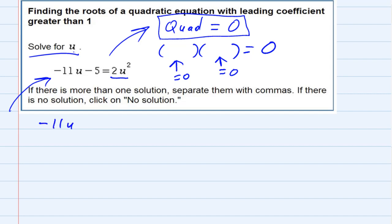So let me just rewrite what we have: negative 11u minus 5 equals 2u squared. Since I want to keep that leading coefficient positive, I'm going to move those terms from the left-hand side over to the right-hand side. By doing the opposite, I'm going to add 11u to both sides, and then I'm also going to add 5 to both sides.